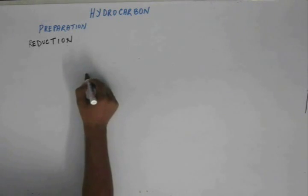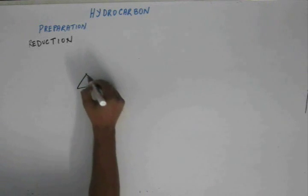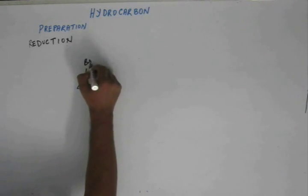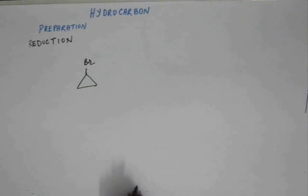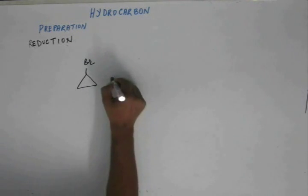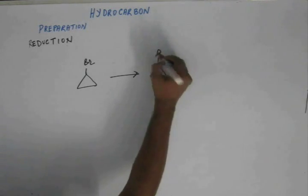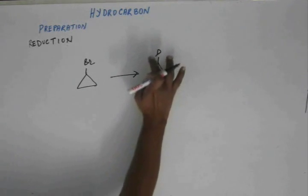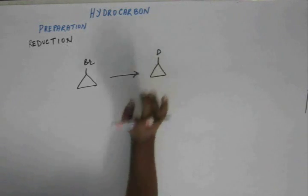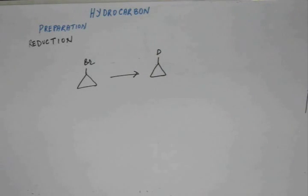Now suppose I have one bromocyclopropane. I want to get this compound out of one bromocyclopropane where that D is an isotope of hydrogen. How can you get that from one bromocyclopentane? You should think of it and you should get the answer.